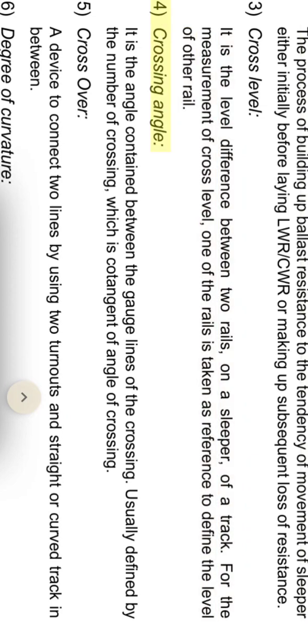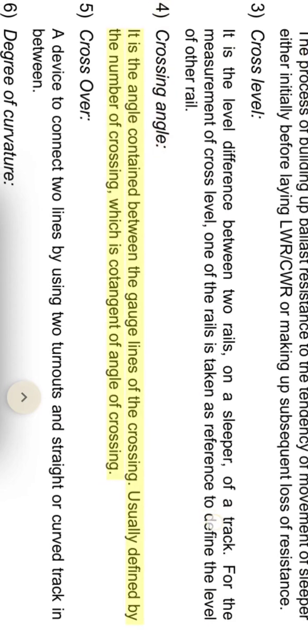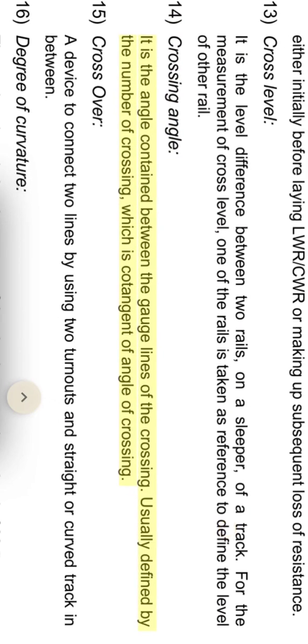Crossing angle: it is the angle contained between the gauge lines of the crossing. Usually defined by the number of crossing, which is the cotangent of the angle of crossing.